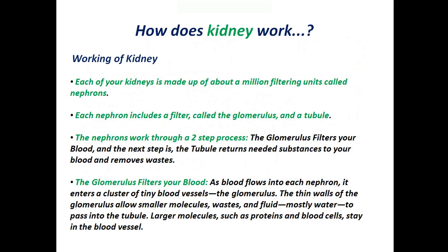How does the kidney work? Each of your kidneys is made up of about a million filtering units called nephrons. Each nephron includes a filter called the glomerulus, and a tubule. The nephrons work through a two-step process: the glomerulus filters your blood, and the tubule returns needed substances to your blood and removes wastes.